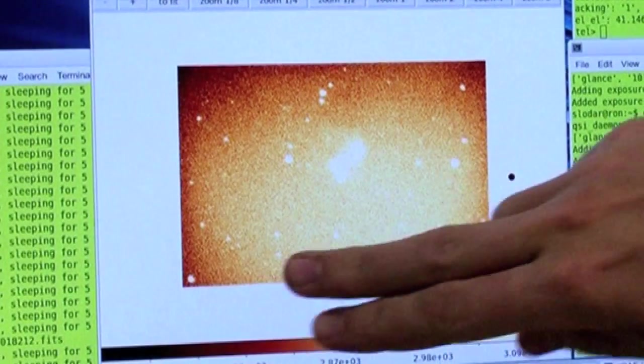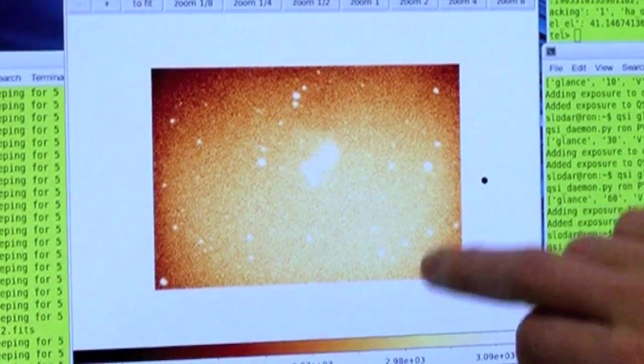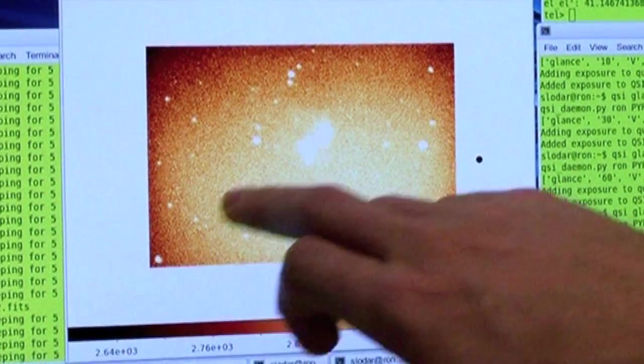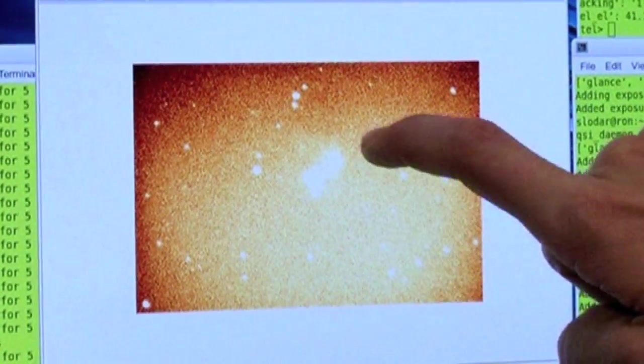So our five-minute exposure has just finished. As you can see, the longer you're exposed for, you get more background noise from the sky, and also the size of the stellar profiles of the other stars is blurred. And here we see the nebulae, and it's starting to look quite bright now.